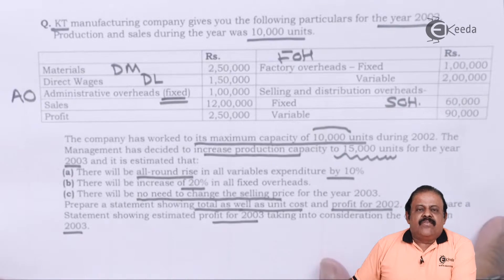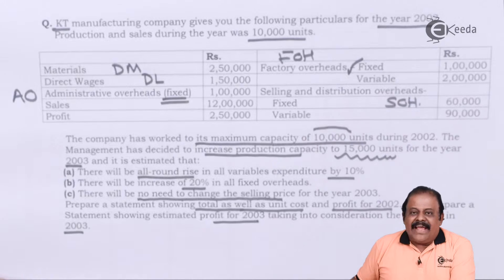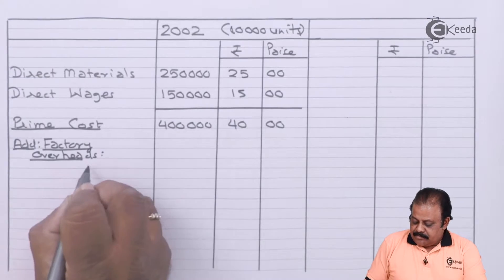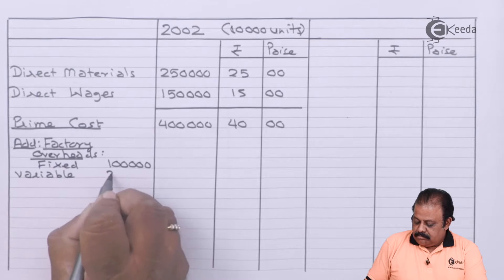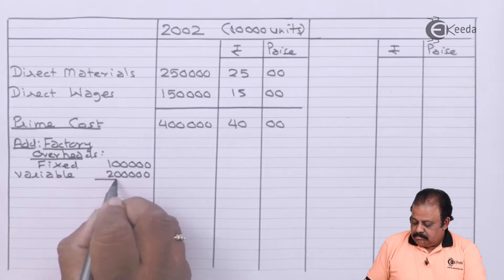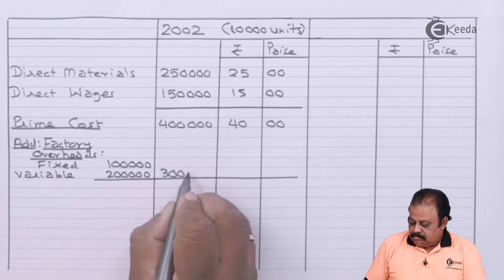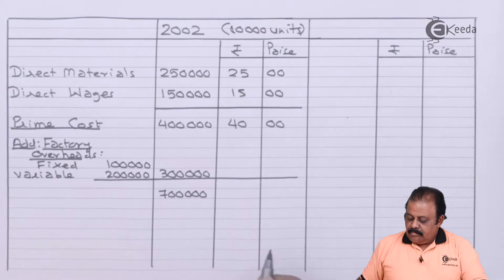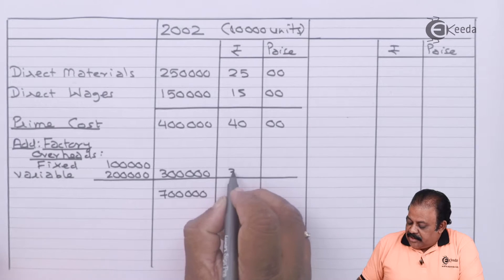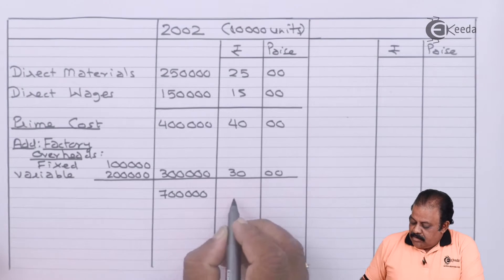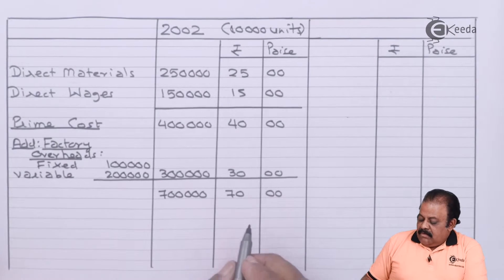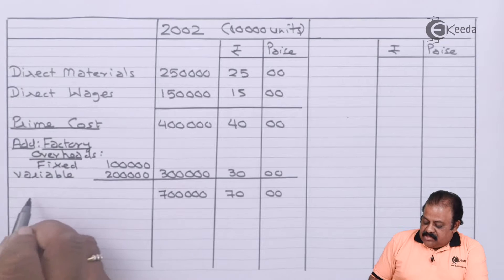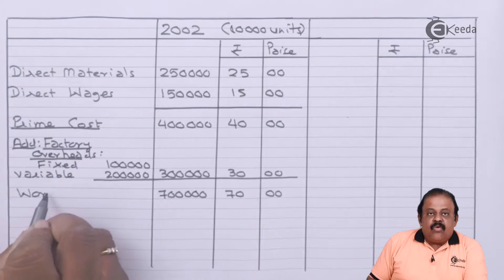To this prime cost we are required to add factory overheads. Factory overheads are given as two types: fixed ₹1,00,000 and variable ₹2,00,000. Per unit factory overheads will be ₹30. This gives us factory cost or works cost.